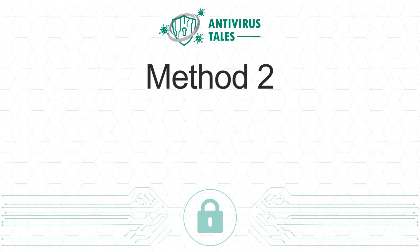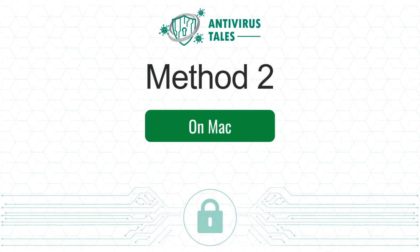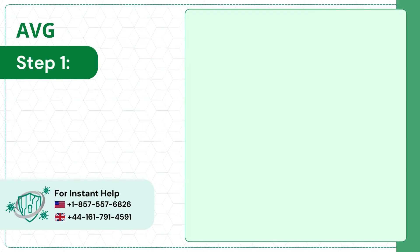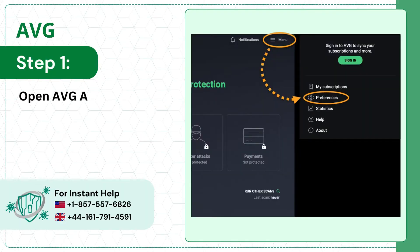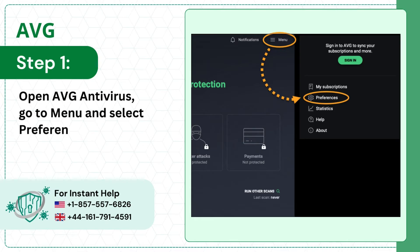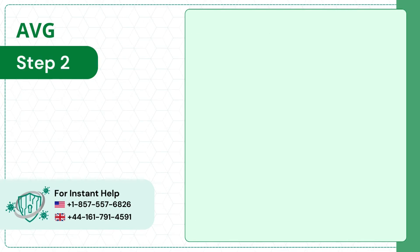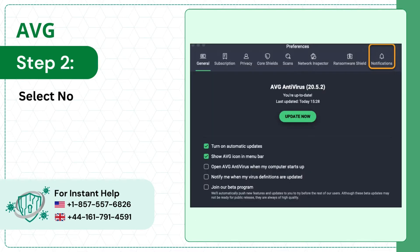Method 2, on Mac. Step 1: open AVG antivirus, go to menu, and select Preferences. Step 2: select Notifications from the taskbar.